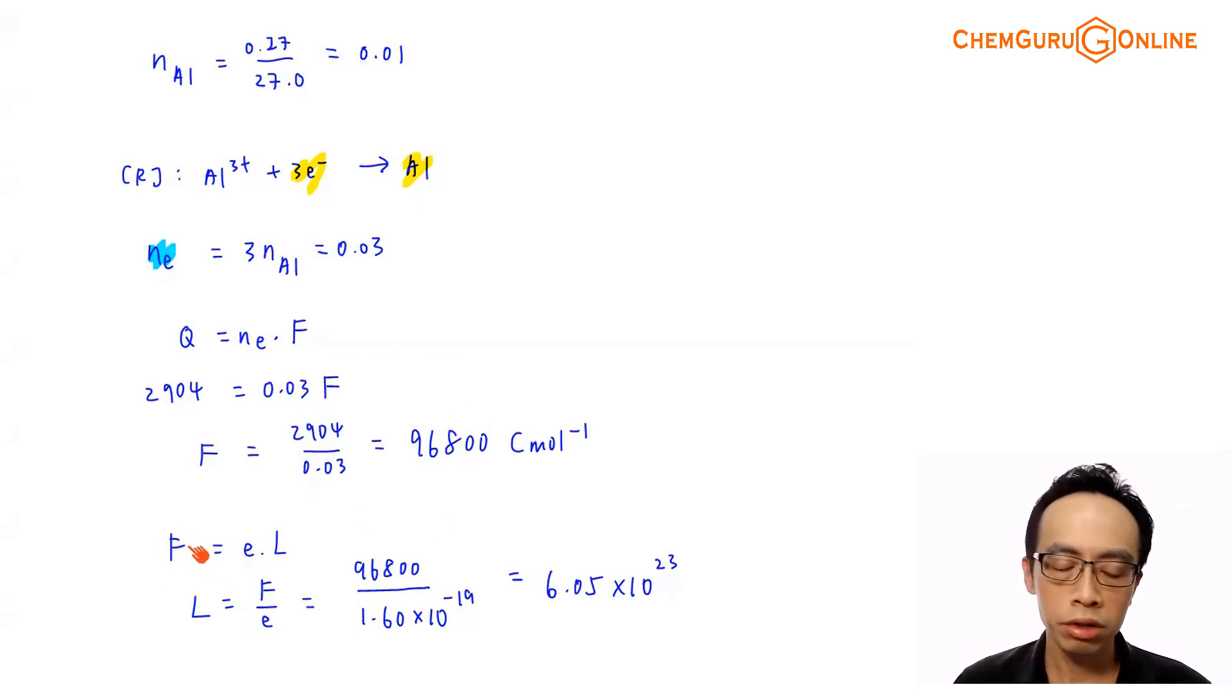Now finally, we can use the third Faraday's equation, charge of 1 mole of electron. My Faraday's constant is the charge of 1 electron multiplied by Avogadro constant. So Avogadro constant L will just be F divided by E. F, we are using 96800 based on what we've calculated. Charge of 1 electron, we can actually get this from the data booklet, which is 1.60 times 10 to the power of minus 19. The value that we will get is 6.05 times 10 to the power of 23, which is a pretty close value.